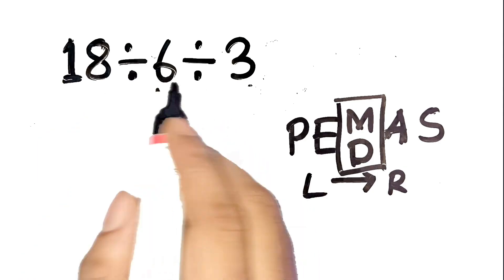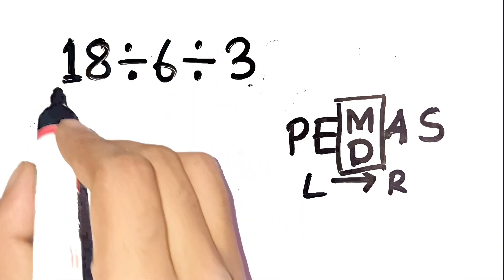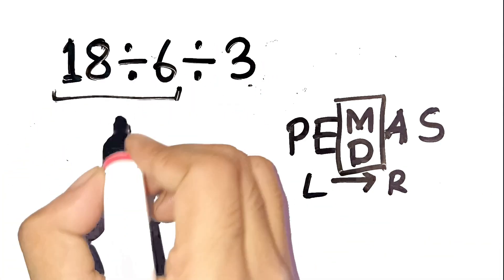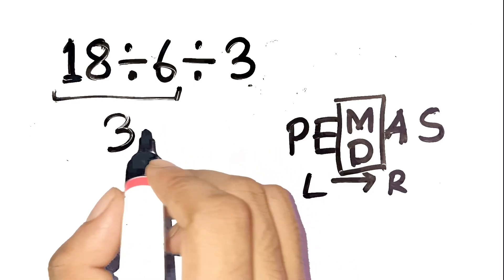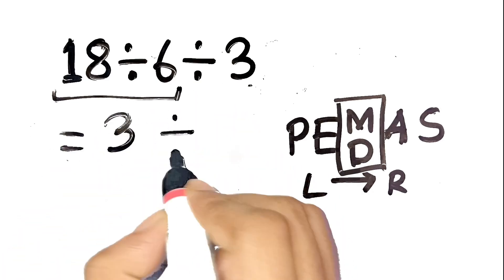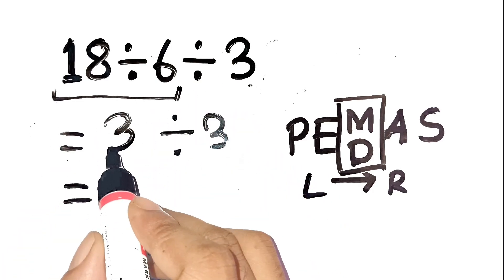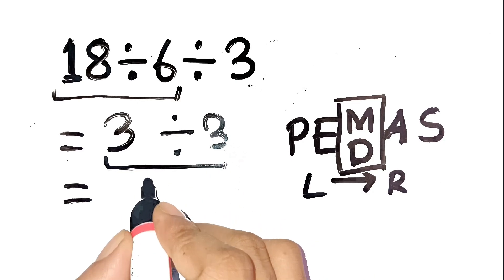Left to right is critical. Step 1: Start from the left. 18 divided by 6 equals 3. Now the expression is 3 divided by 3. Step 2: 3 divided by 3 equals 1.